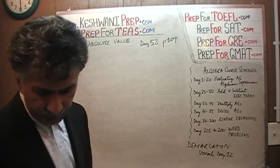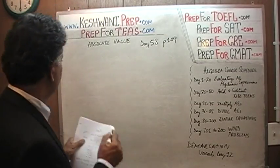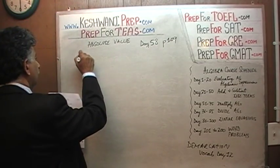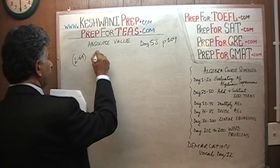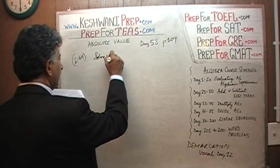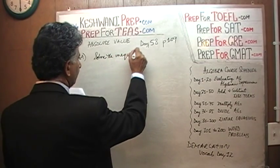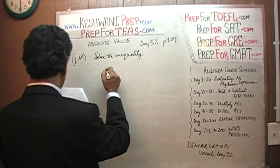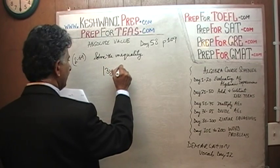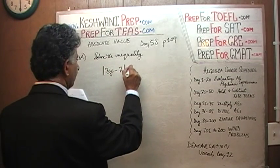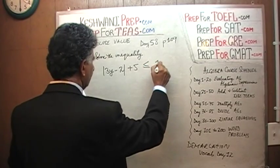Here's the problem given to us: problem 2.64. It says solve the inequality, and the inequality they give us is: the absolute value of 3y minus 2, plus 5, is less than or equal to 1.